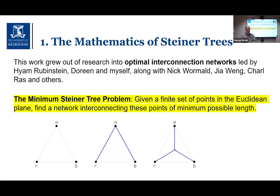The fundamental problem we've been looking at is the minimum Steiner tree problem. In its simplest form, we're given a finite set of points in a Euclidean plane — with the usual way of measuring length — and you want to find a network that interconnects those points which has minimum possible length, the length being the sum of the lengths of all edges in the network.